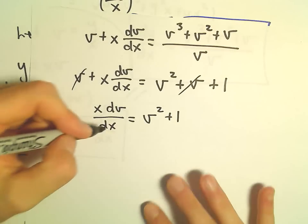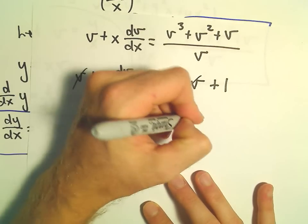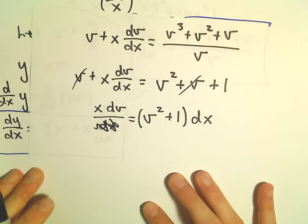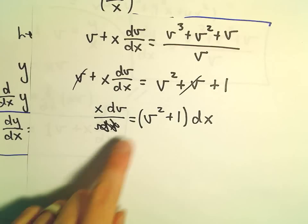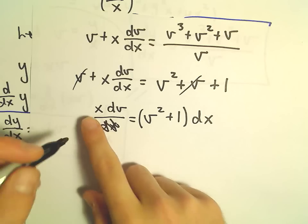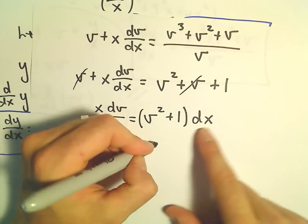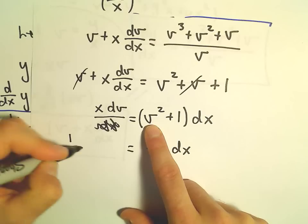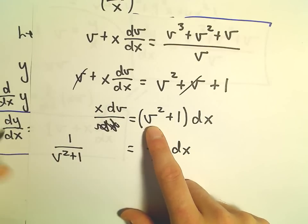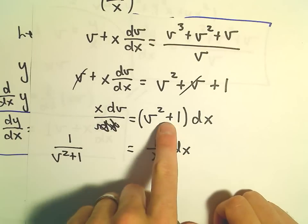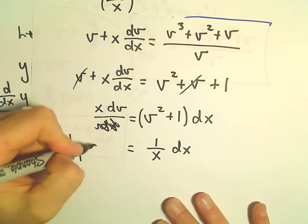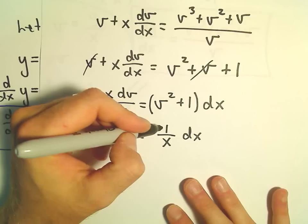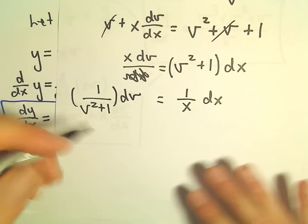We can multiply both sides by dx, moving it to the right side. We want to put the v's on one side and the x's on the other, so we multiply by 1/x and by 1/(v² + 1). That gives us dv/(v² + 1) equals dx/x. Now everything is nicely separated and we can integrate.